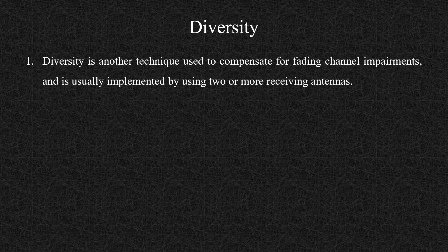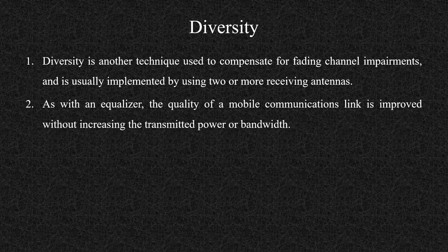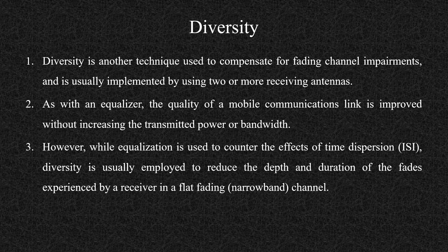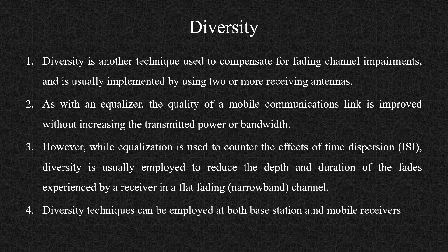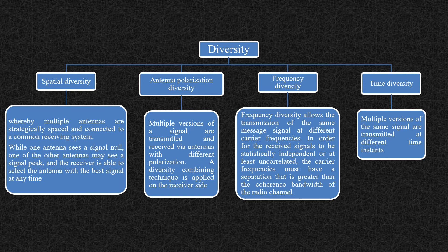Now we are moving towards a very interesting part — diversity. Diversity is another technique used to compensate for fading channel impairments and is usually implemented by using two or more receiving antennas. As with an equalizer, the quality of a mobile communication link is improved without influencing the transmitted power or bandwidth. While equalization counters the effect of time dispersion (ISI), diversity is usually employed to reduce the depth and duration of the fades experienced by the receiver in a flat fading, that is narrow band, channel. Diversity techniques can be employed at both base station and mobile receiver. Diversity techniques are divided into four major categories: spatial diversity, antenna polarization diversity, frequency diversity, and time diversity.